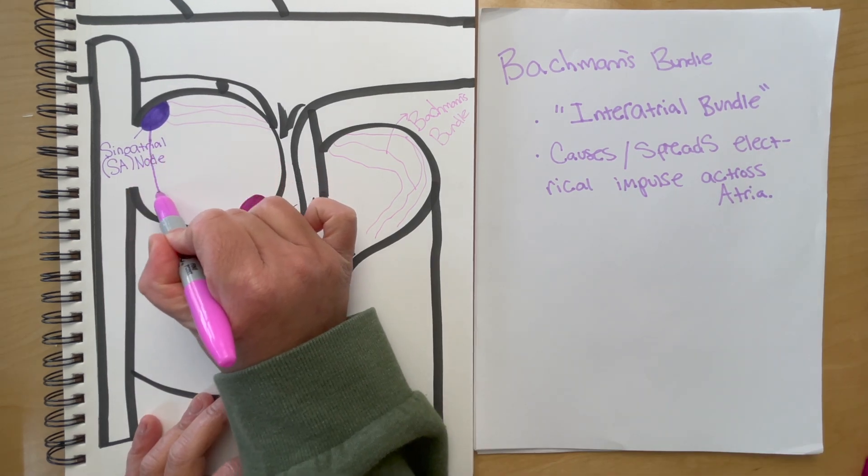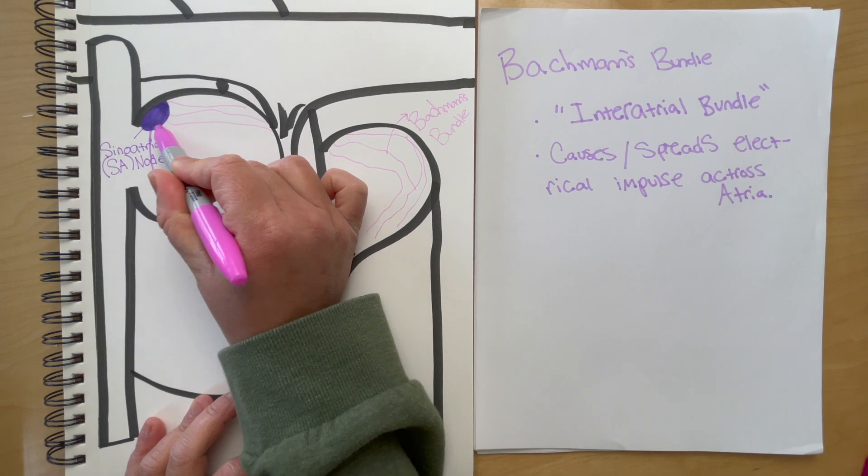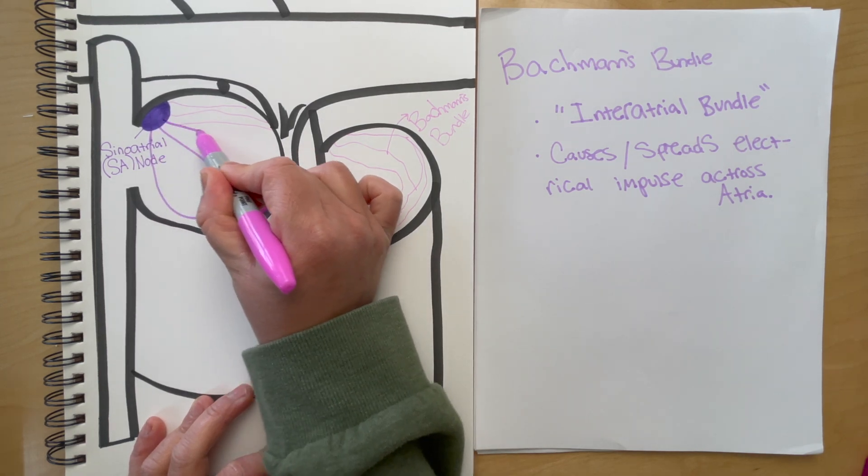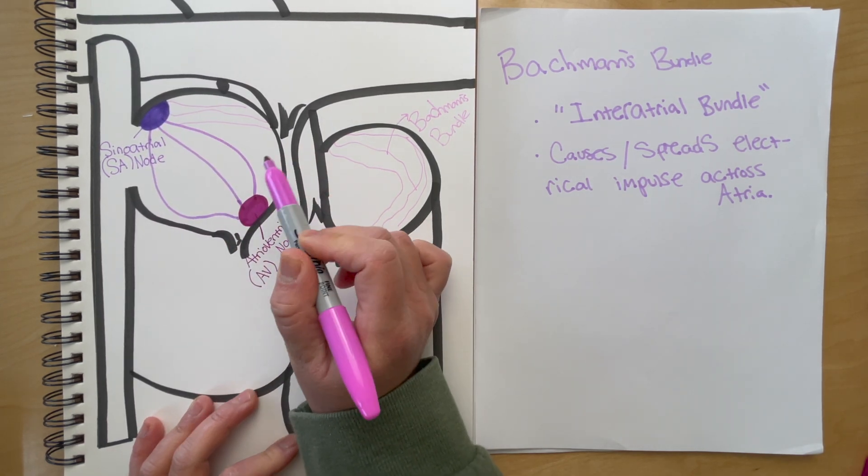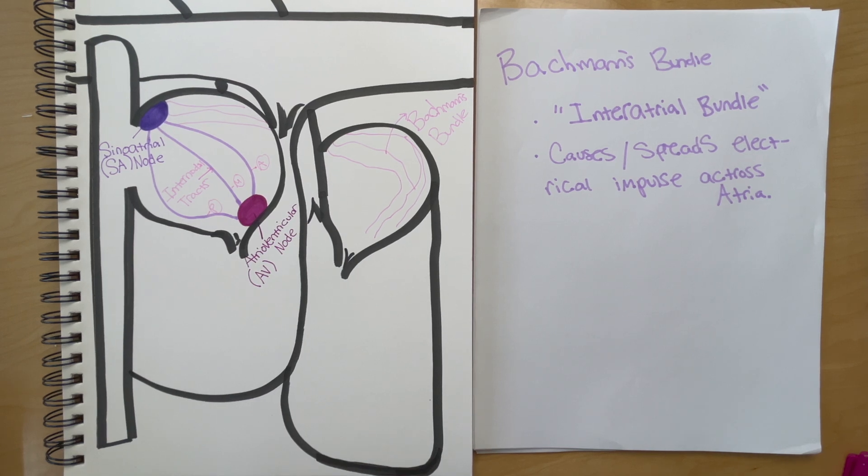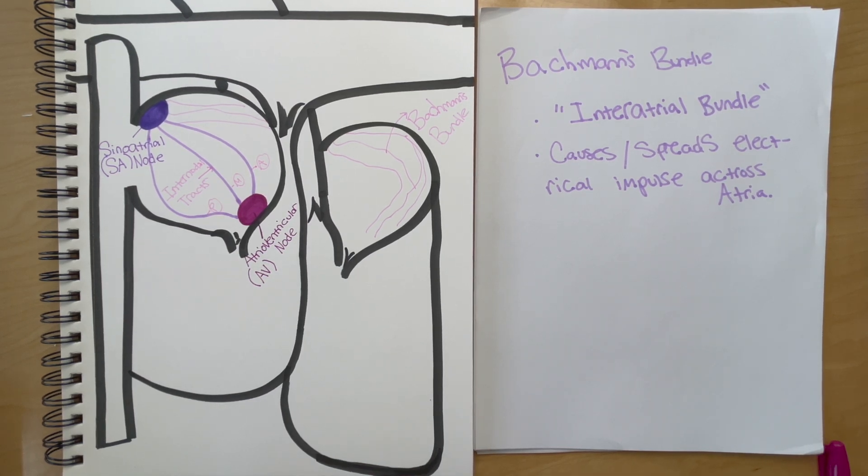Also coming off the sinoatrial node are your internodal tracts. Technically there are three. The job of these internodal tracts is to spread the impulse from your SA node to your AV node.